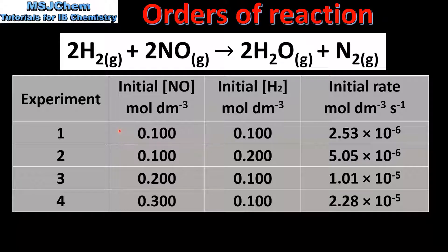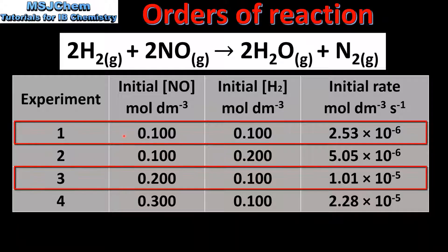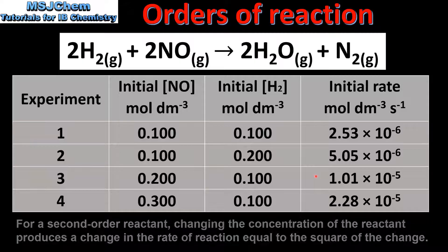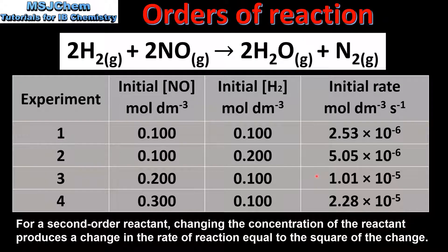We'll start by looking at the nitrogen monoxide. If we compare experiments 1 and 3 we can see that the concentration of nitrogen monoxide has been doubled, while the concentration of hydrogen remains constant. If we compare the rates of reaction for experiments 1 and 3 we can see that the rate has increased by a factor of 4. So when the concentration of nitrogen monoxide is doubled the rate increases by a factor of 4 — therefore the reaction is second order with respect to nitrogen monoxide.